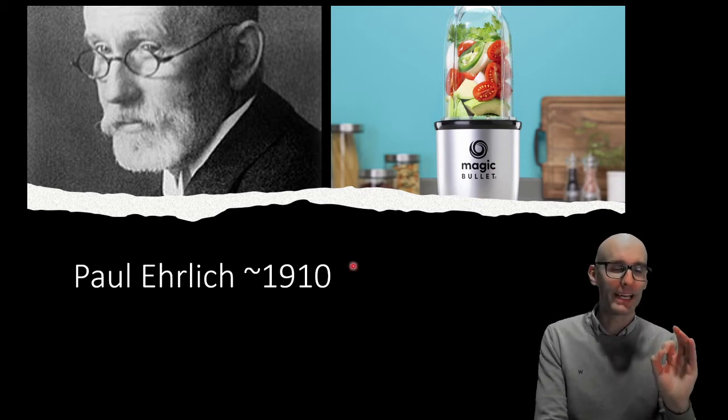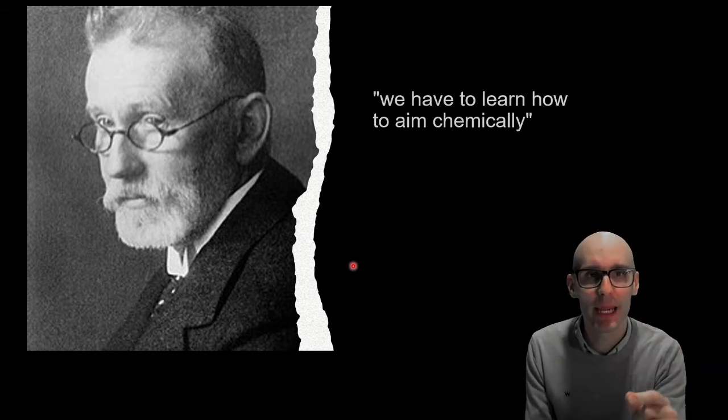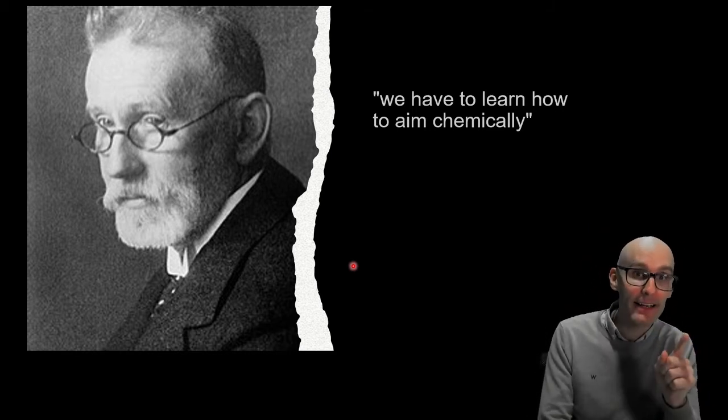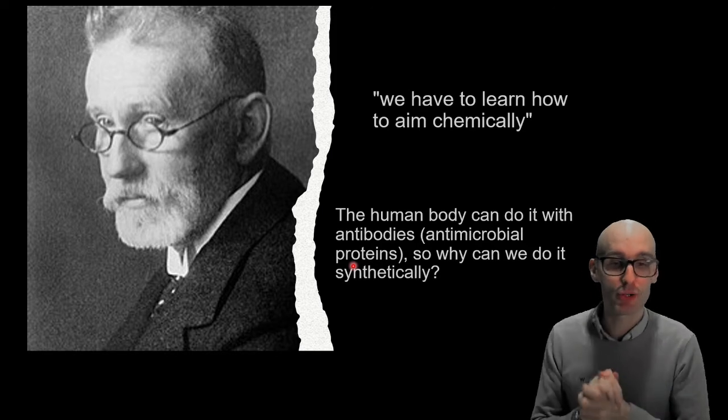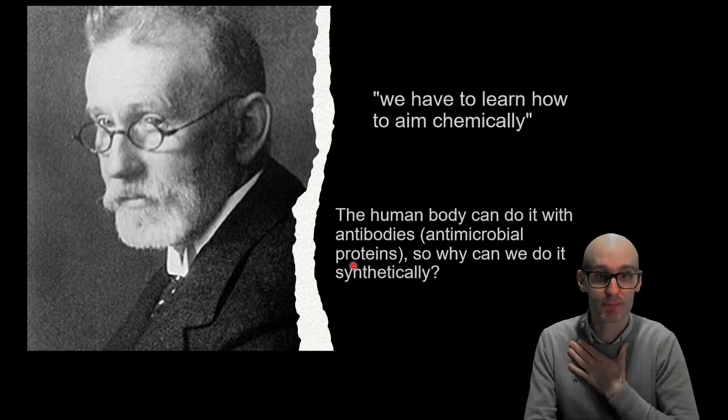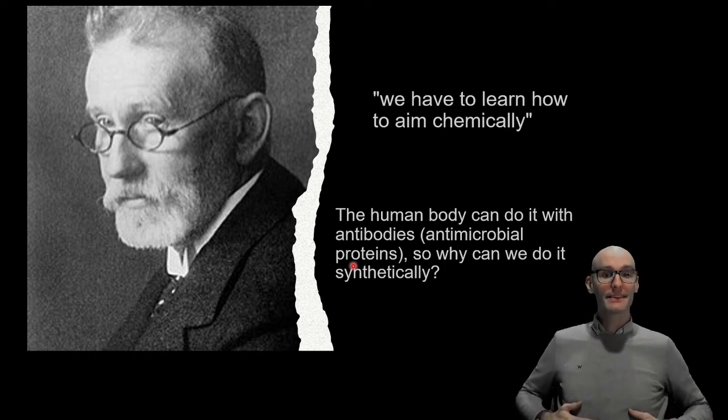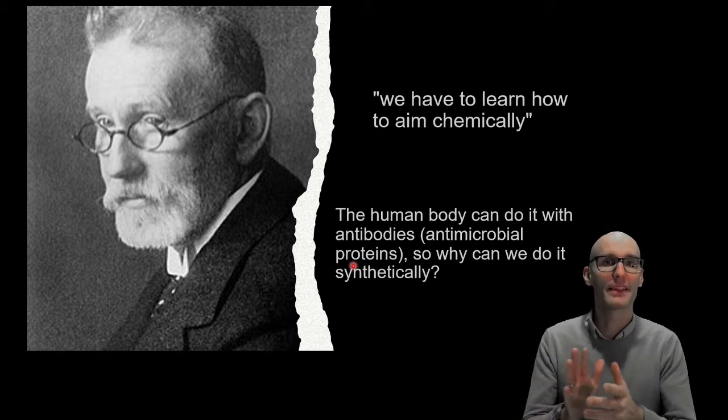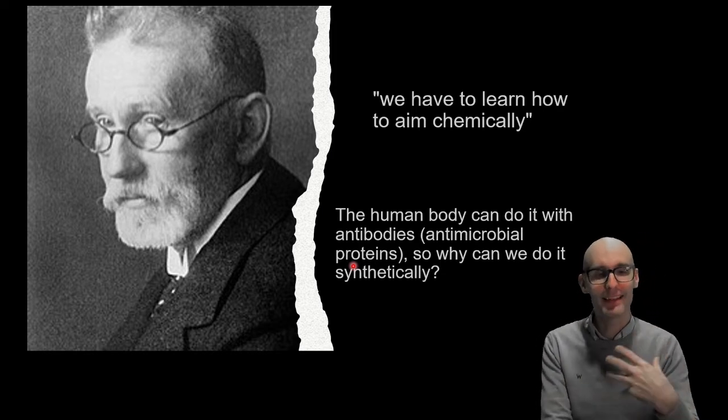Let me just explain his quote. So we have to learn how to aim chemically. So he's talking about that gun. Can we aim chemically? And he knew it could be done. How did he know it could be done? Because in the human body, we can do it. And there had been the discovery of a protein, which I'll cover in a later video called antibodies, which are antimicrobial proteins that our bodies produce. And we knew that our body produces a protein that doesn't kill us, but it kills pathogens. And so this gave Paul Ehrlich the idea that we could kill bacteria and not kill our own cells because our body does it.